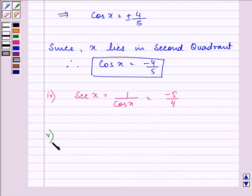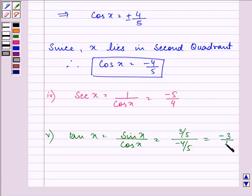Further, the value of tan x is sin x divided by cos x. The value of cos x is minus 4 by 5 and the value of sin x is 3 by 5, so we have the value of tan x as minus 3 by 4.